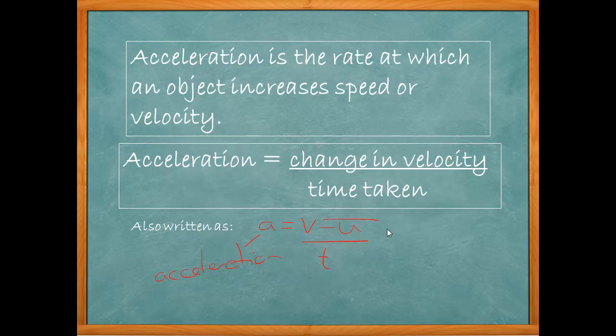V is the final velocity. We'll look at an example in just a moment. U is the initial velocity, what it's starting out as. T is time. So in our equation, acceleration is the final velocity minus the initial velocity divided by time.